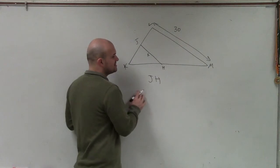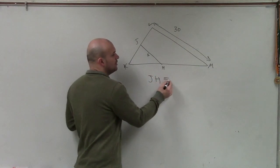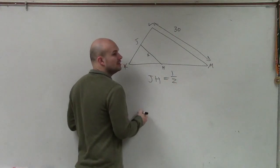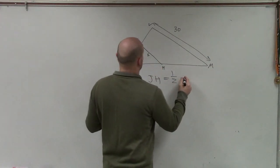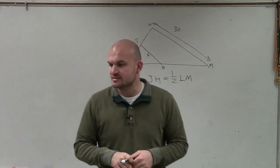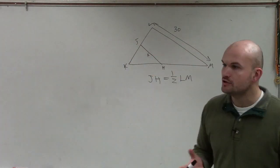So since JH is a mid-segment, we now know that JH is just going to be one-half your opposite side, which is LM, number 6. So it's just one-half of that.